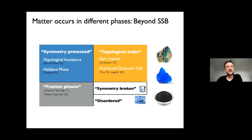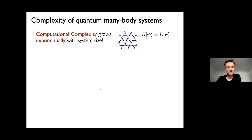Even more recently, so-called fracton topological phases have gotten a lot of attention, which are defined in terms of rather exotic quasi-particle excitations with reduced mobility. In this talk, however, I want to discuss the former two — namely symmetry-protected topological phases and genuinely topologically ordered phases — and show how we can use quantum computers to study these kinds of phases.